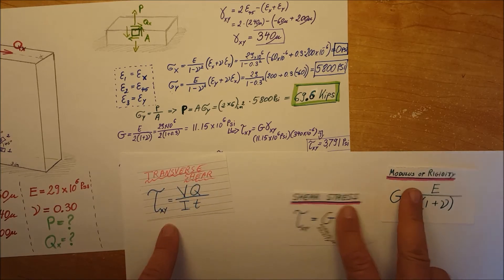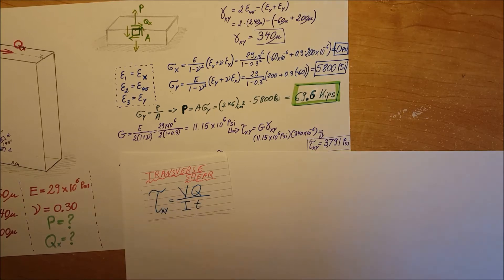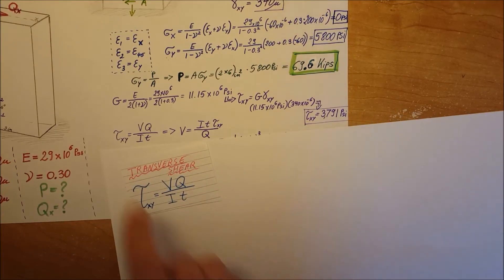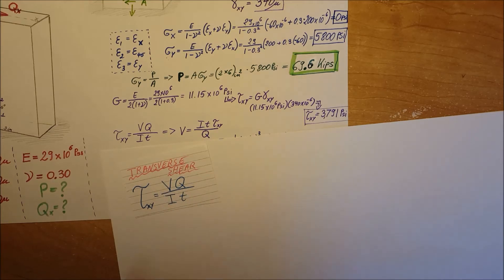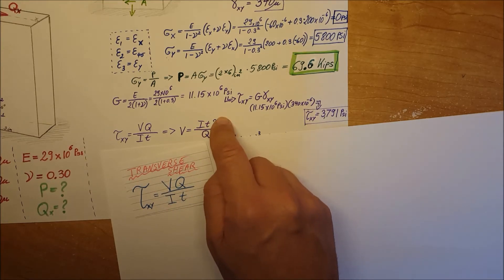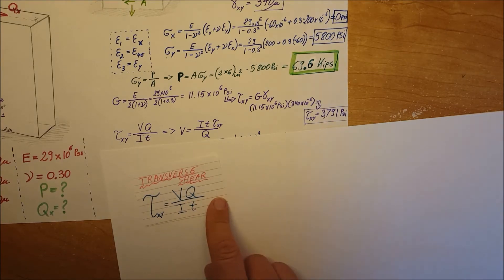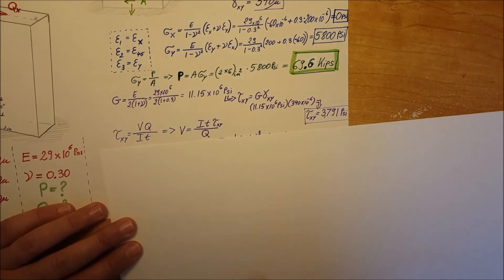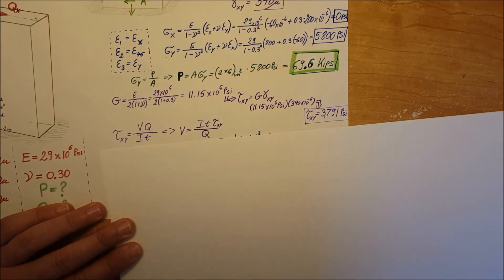Now we found our shear stress, so finally we can use our transverse shear formula. We're going to solve for V: V equals I times τ divided by Q. What else we don't know? We don't know I, we don't know t, and we don't know Q, but it's easy to calculate.